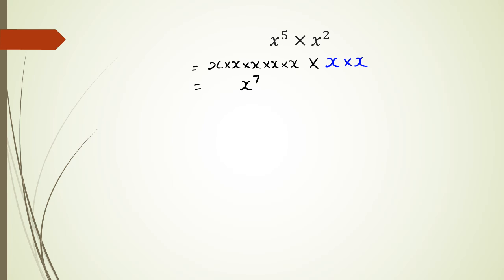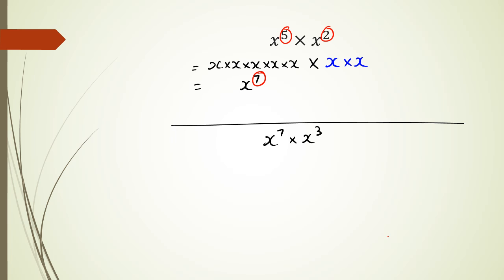Now this is taking an incredibly long time. What you should notice is: can you see a pattern between these three numbers here? If you say 5 plus 2 equals 7, you're absolutely right. So that means if I have something like x to the power of 7 times x to the power of 3, the powers get added, so this equals x to the power of 10.